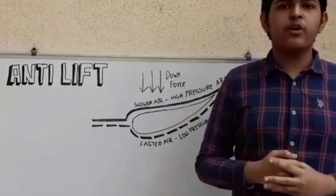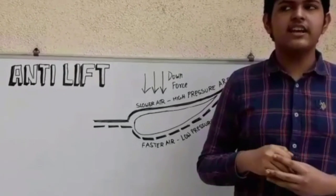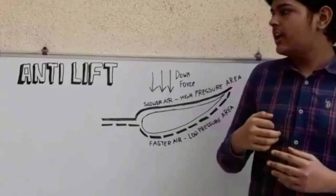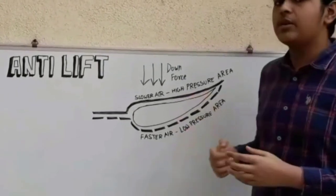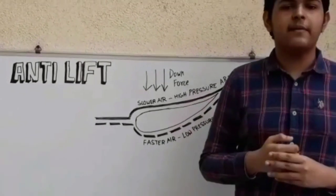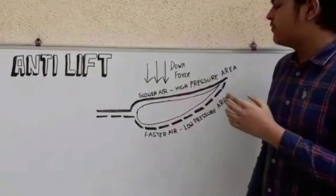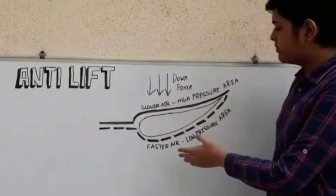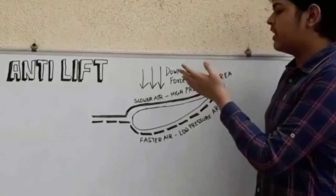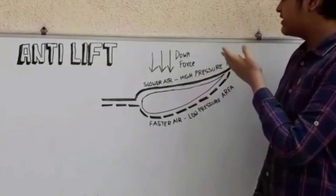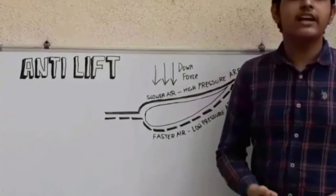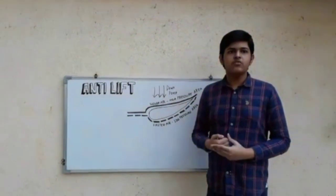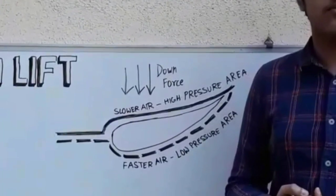Downforce is even more important when it comes to race cars, as they work at much higher speeds. Downforce is created in cars with the help of wings, diffusers, etc. Wings in cars work differently — they make the air flow move below the wing faster than above the wing, creating a low pressure area below the wing and a higher pressure area above it, which helps in generating downforce.